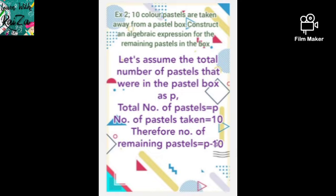What is the remaining number of pastels? Always remember: when somebody asks what is remaining, it is subtraction. So the algebraic symbol to use here is subtraction. Total number of pastels is P, and 10 were taken away, therefore P minus 10 is the remaining.